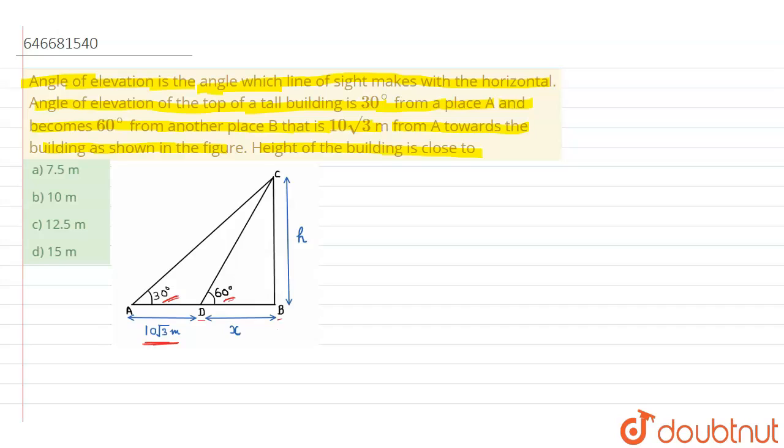For triangle DCB, the value will be tan 60 degrees is equal to h by x. So the value will be root 3 is equal to h by x. This is our first equation.